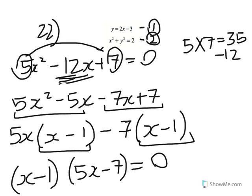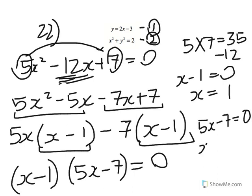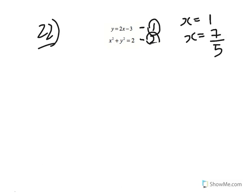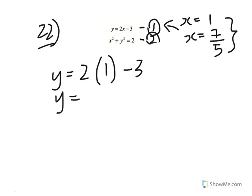From x minus 1 equals 0, we get x equals 1. From 5x minus 7 equals 0, we get x equals 7 over 5. Substituting x equals 1 back into the first equation: y equals 2(1) minus 3, so y equals negative 1. The first solution is (1, −1).